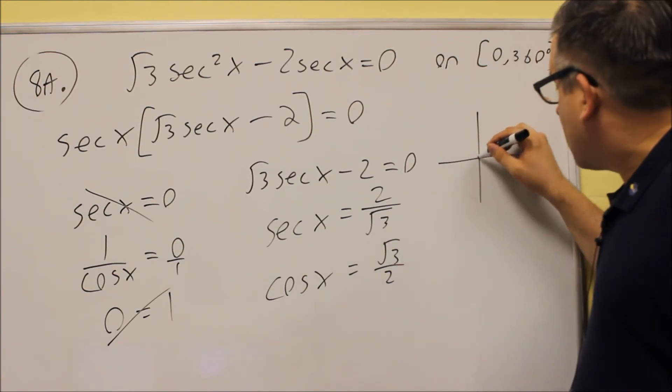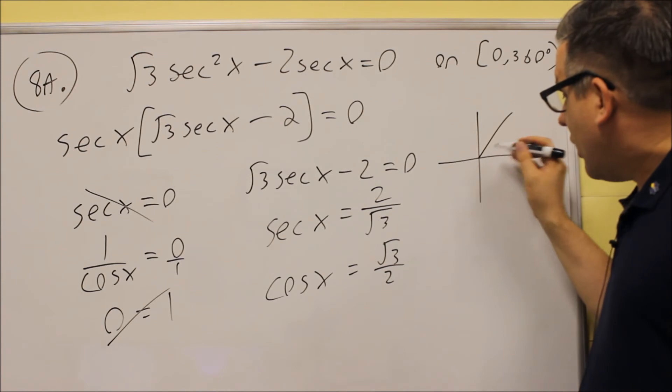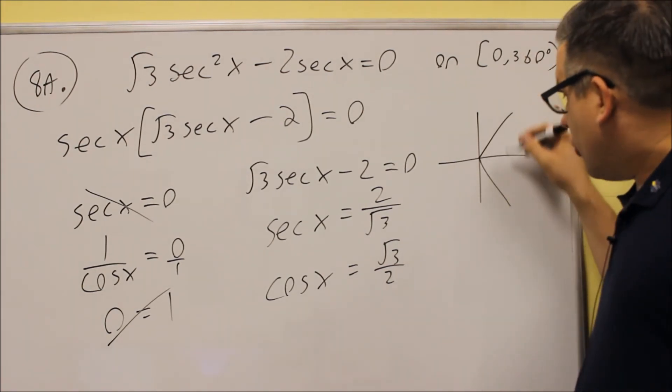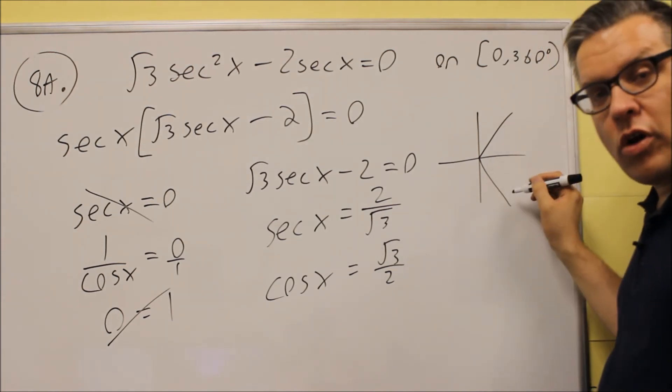If you take a look at the unit circle, you are going to find one answer here in the first quadrant and you are going to find another answer down below here. And so you will get two answers that you will look in the unit circle, one in the first quadrant and one in the fourth quadrant.